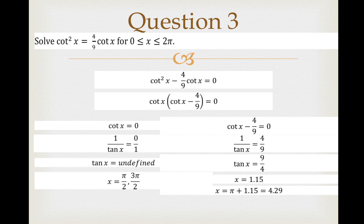That means your angle x must be in quadrant 1 and quadrant 3. This is our basic angle. To find the other angle in quadrant 3, π + 1.15 = 4.29.